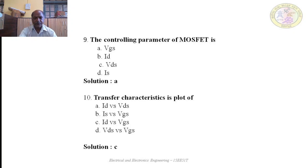Question 10: Transfer characteristics is a plot of: A — ID versus VDS; B — IS versus VGS; C — ID versus VGS. The correct answer is C — ID versus VGS. The transfer characteristics of a MOSFET is a curve drawn between drain current (output current) and gate-to-source voltage (input voltage), because in MOSFET the output current is controlled by input voltage.